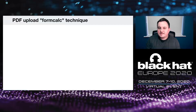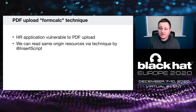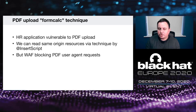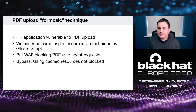While testing various PDF generation software and sites, I came across an HR application vulnerable to PDF upload. I could use insert-script's technique to read same-origin resources, which was really cool. However, the WAF was blocking the PDF user-agent, so my attack wasn't working. I found a solution to bypass that using cached resources — as long as the resource was cached, I could read it without triggering the WAF.